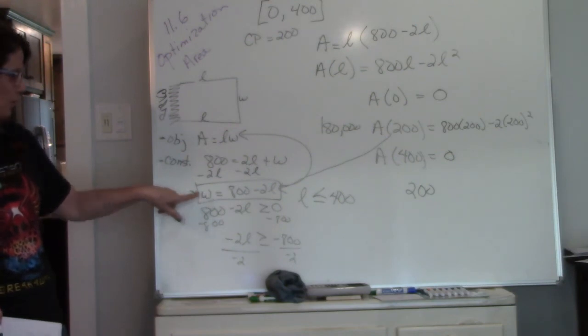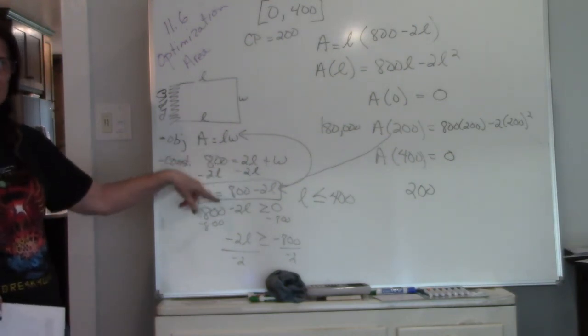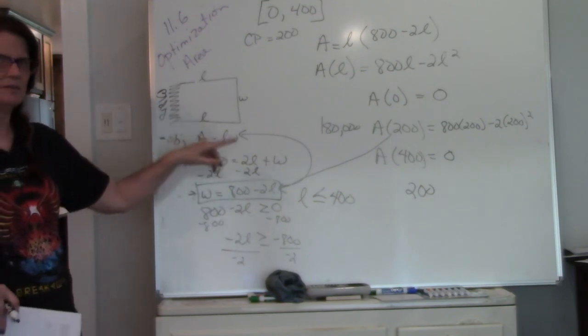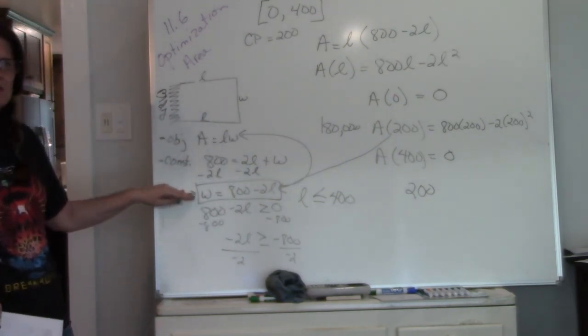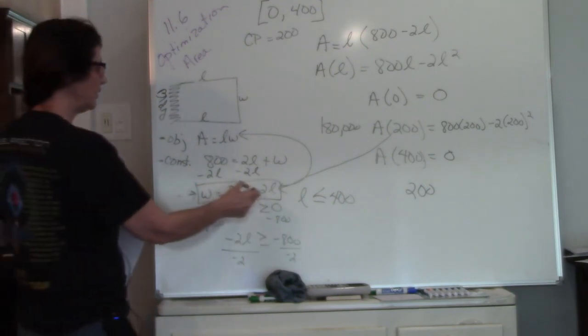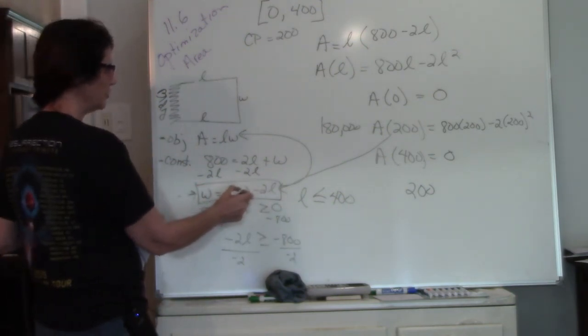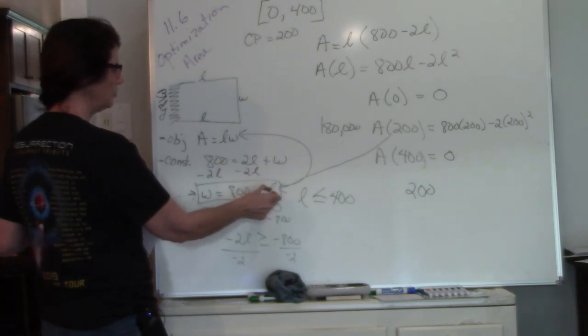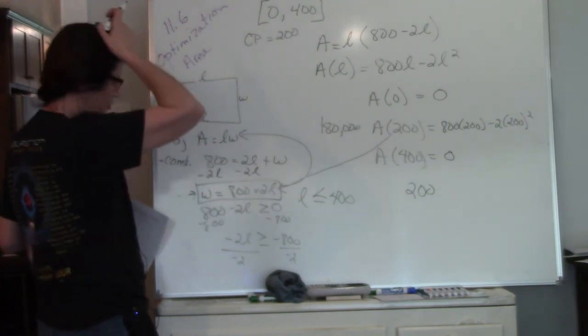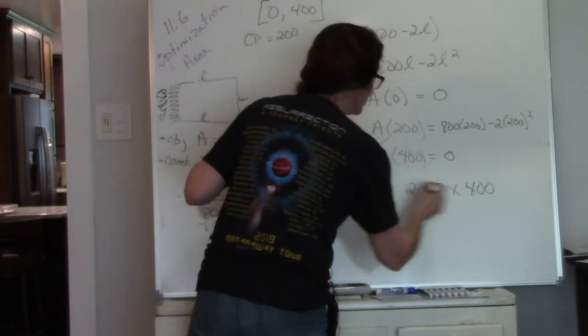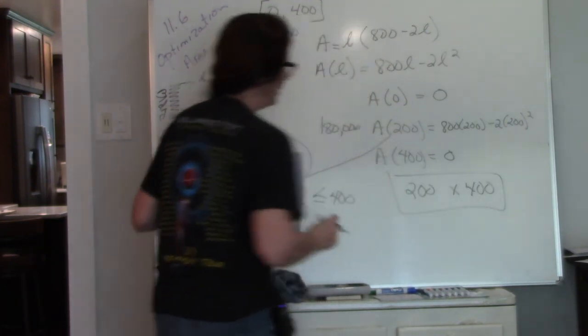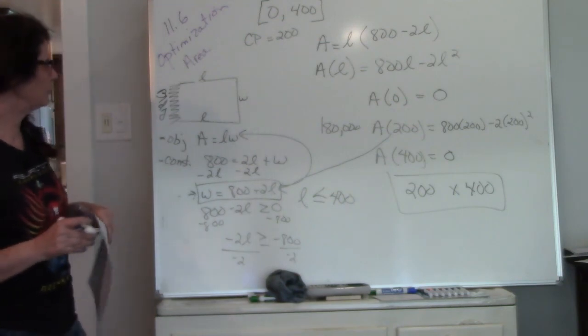To find my width, I'm going to take my 200 and plug it back into my constraint to find my width. That's why I always mark it. I always put a square or a circle or a big star by it, because I know I have to use it again. So I plug 200 into here. So it's 800 minus 2 times 200, so 800 minus 400 is 400. So my dimensions is 200 by 400.